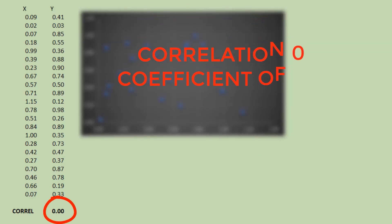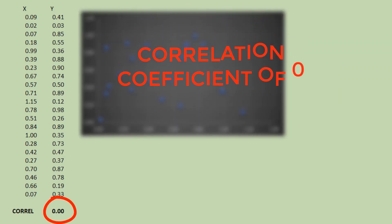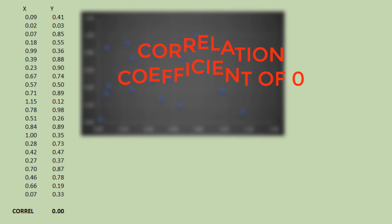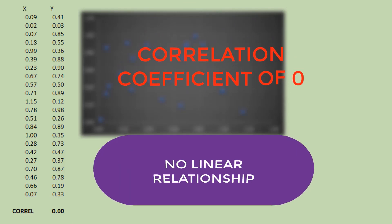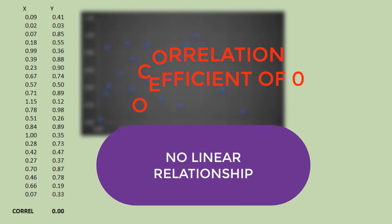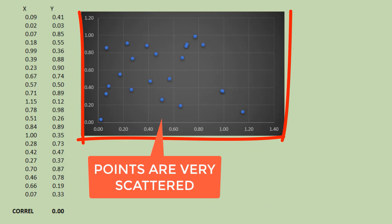A correlation coefficient of 0 means that the two variables have no linear correlation. When we make a scatterplot, the points are very much scattered.